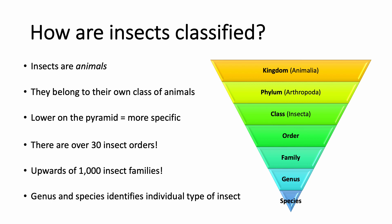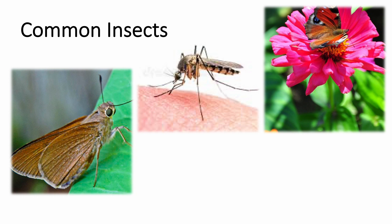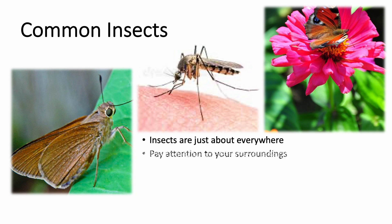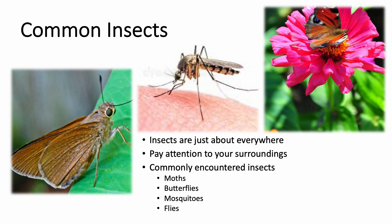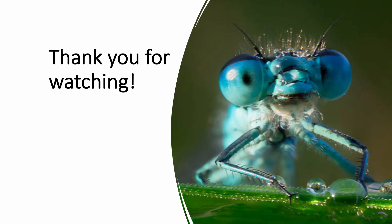Insects are everywhere — in the oceans, mountains, deserts, and in your own yard. Pay attention to your surroundings and you'll discover more insects in your area. The most commonly encountered insects are different types of moths, butterflies, mosquitoes, and flies. Keep in mind that a mosquito is actually a type of fly.